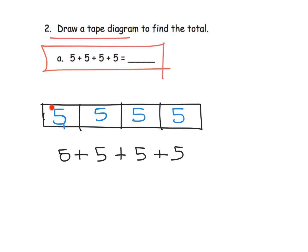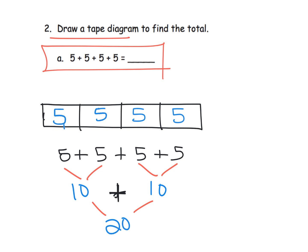I like to stack the equations so students can keep one-to-one correspondence and don't lose track. Five plus five is ten, five plus five is ten, and then ten plus ten — second graders can do that one quickly — is twenty. So five plus five plus five plus five equals twenty.